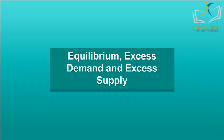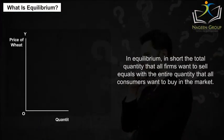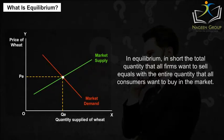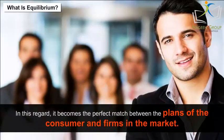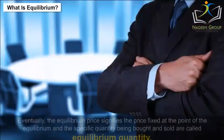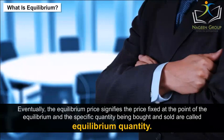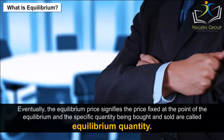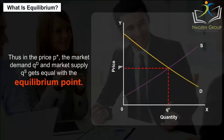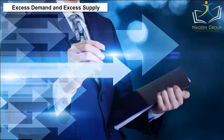Equilibrium, Excess Demand and Excess Supply. What is equilibrium? In equilibrium, the total quantity that all firms want to sell equals the entire quantity that all consumers want to buy in the market. It becomes the perfect match between the plans of the consumer and firms in the market. The equilibrium price is the price fixed at the point of equilibrium, and the specific quantity being bought and sold is called the equilibrium quantity. At price P, market demand QD and market supply QS become equal at the equilibrium point.